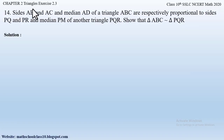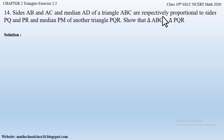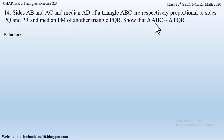Question number 14 from Exercise 2.3, Chapter 2 Triangles states: sides AB and AC and median AD of triangle ABC are respectively proportional to sides PQ, PR, and median PM of another triangle PQR. Show that triangle ABC is similar to triangle PQR.